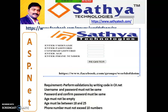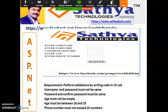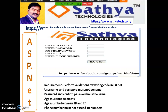Case Study 5: Enter username, password, confirm password, age, and phone number. Perform validations: username and password must not be empty; password and confirm password must be the same; age must not be empty; age must be between 18 and 25; phone number must not exceed 10 digits. For phone number, use the MaxLength property set to 10 on the text box so it won't allow more than 10 characters. Display all errors at a time using multiple if statements.